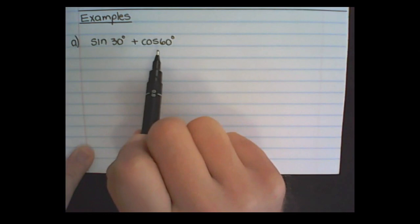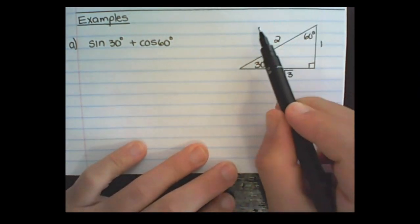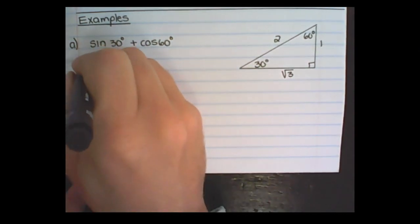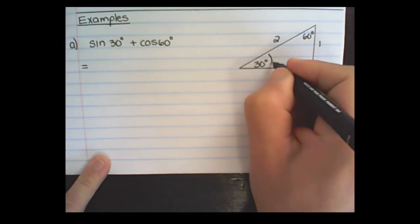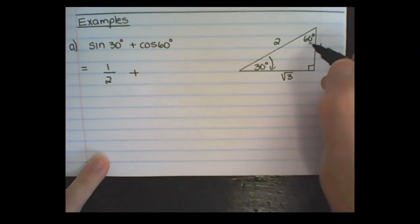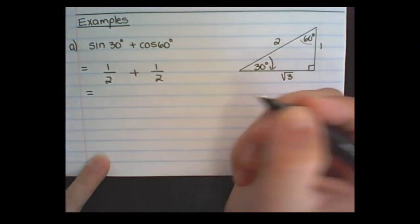For example, we want to solve sine of 30 degrees plus cosine of 60 degrees without a calculator. We draw the relevant triangle and use it to find the values. It's important to draw this from memory and remember which values go where. At 30 degrees, sine is opposite over hypotenuse, so that is a half. And cosine of 60 is adjacent over hypotenuse, which is also a half. So a half plus a half equals one.